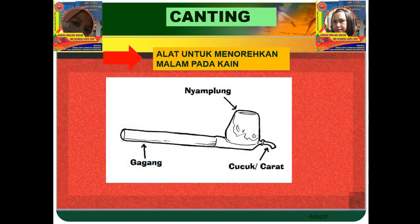Notot yang untuk menurunkan malam pada kain itu digunakan canting. Canting itu terdiri dari gagang, kemudian nyamplung, dan cucuk atau cerat.